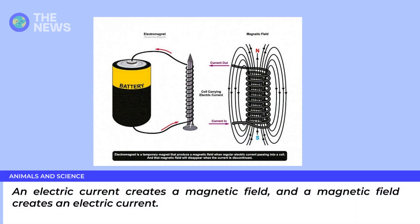An electric current creates a magnetic field, and a magnetic field creates an electric current.